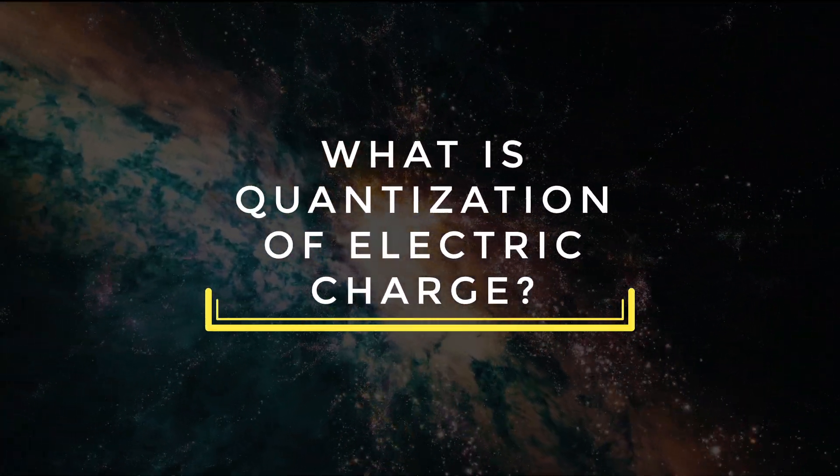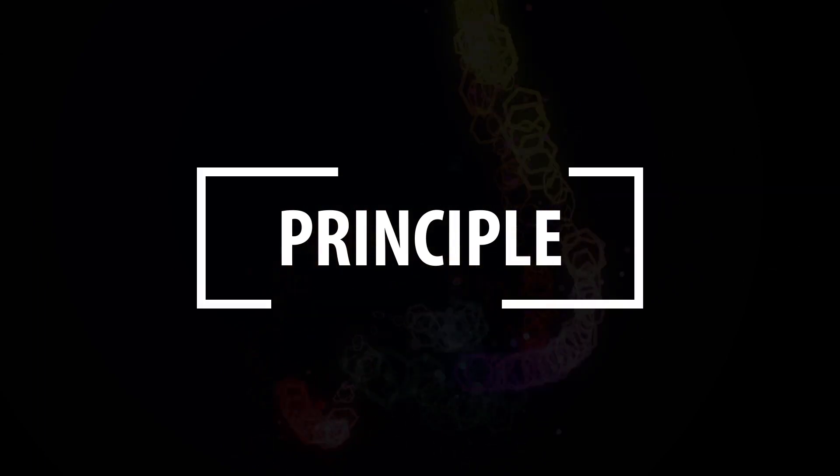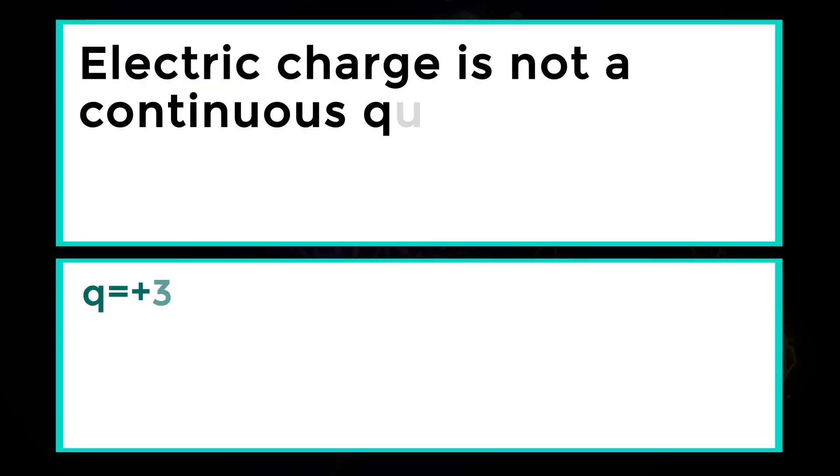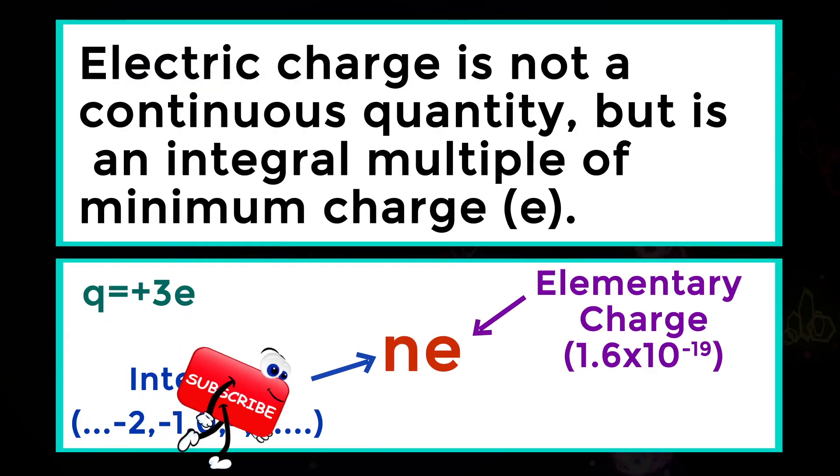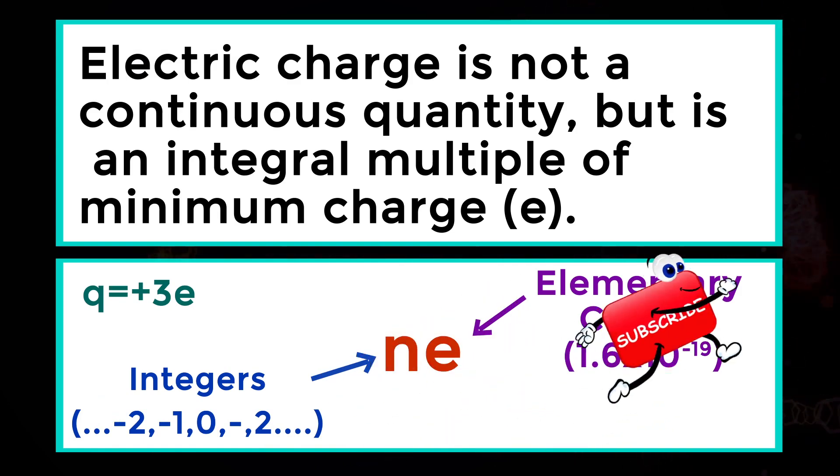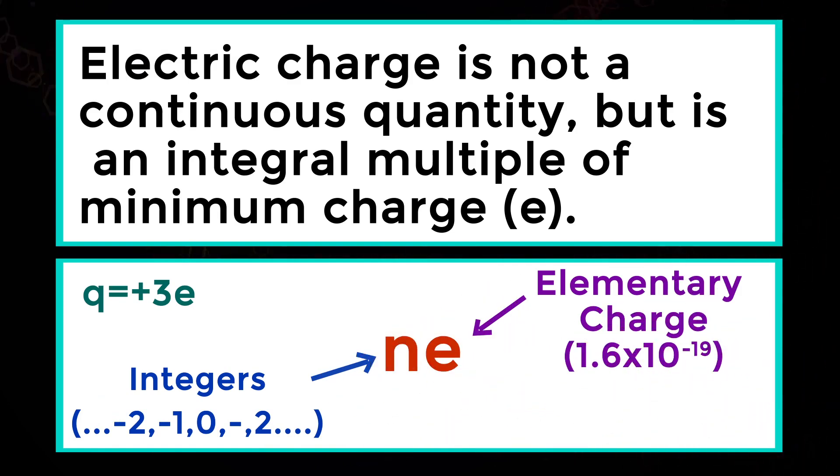What is quantization of electric charge? Principle: Electric charge is not a continuous quantity, but is an integral multiple of minimum charge e.